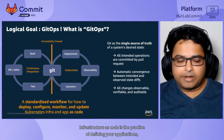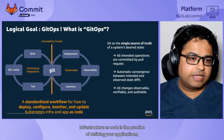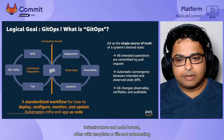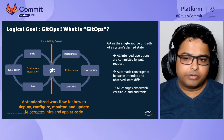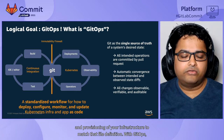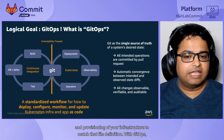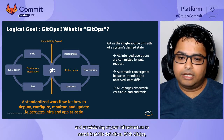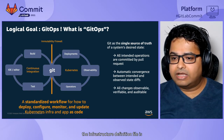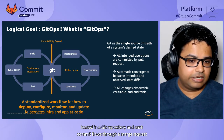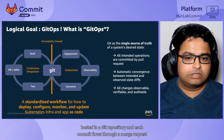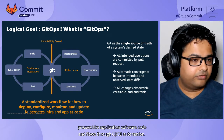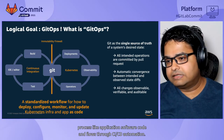Infrastructure as code is the practice of defining your application's infrastructure in code format — often with a template or file — and automating the provisioning of your infrastructure to match that file definition. With GitOps, the infrastructure definition file is hosted in a Git repository and each commit flows through a merge request process like application software code, and flows through CI/CD automation.